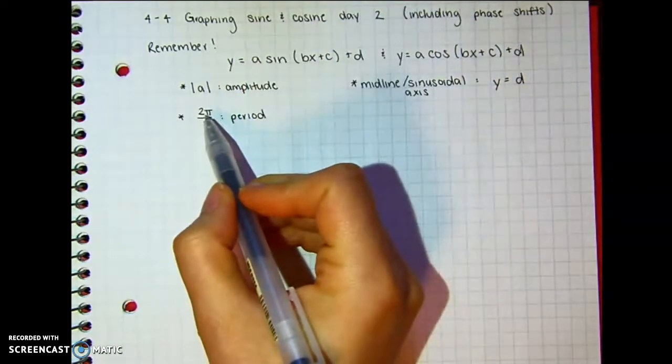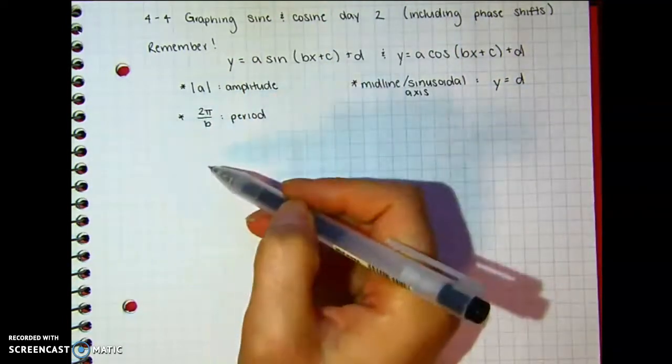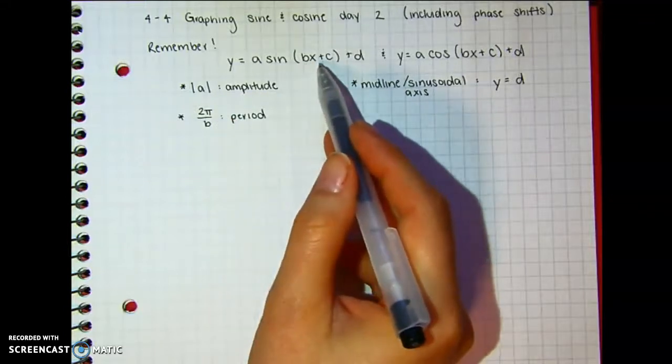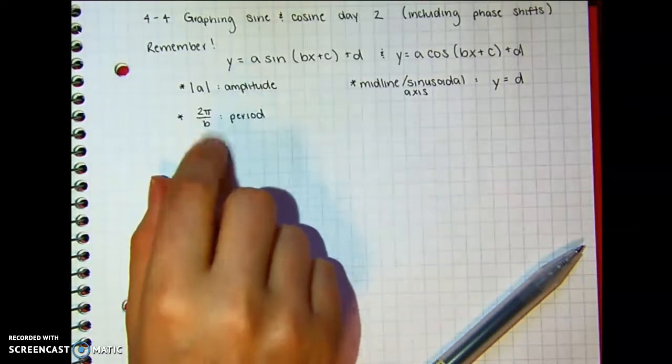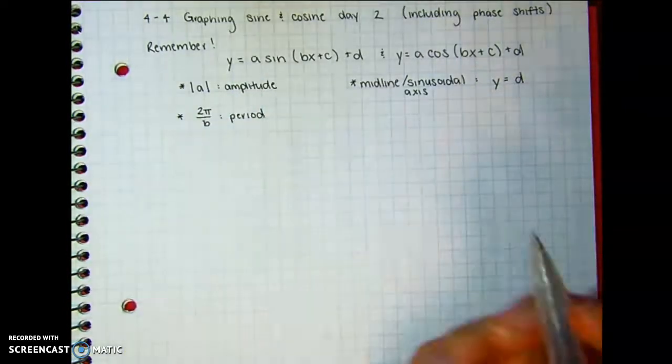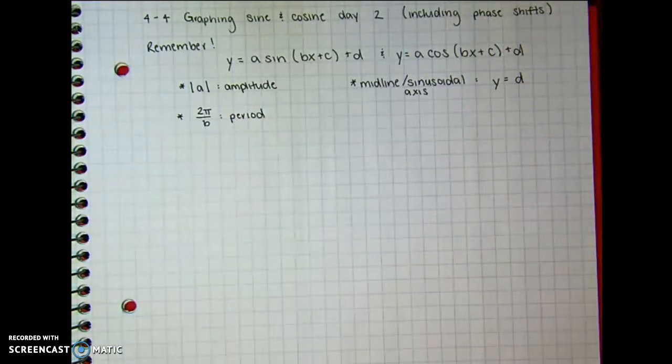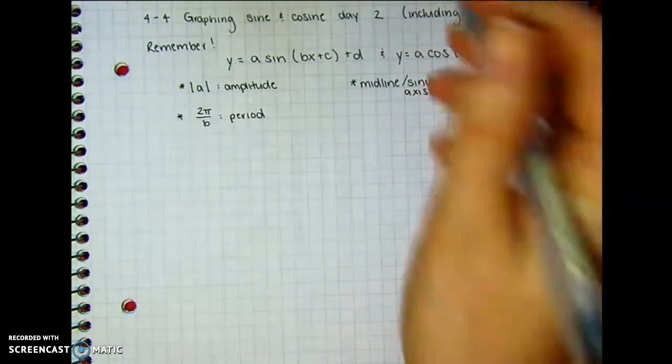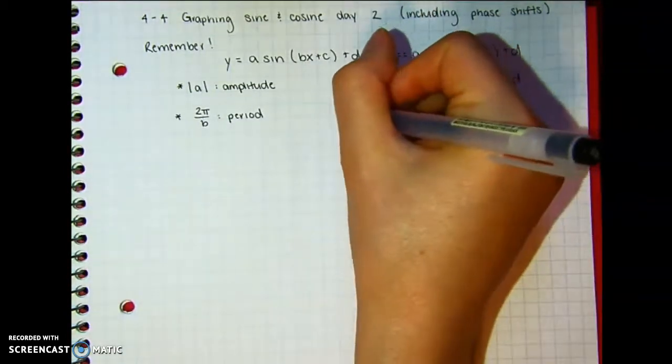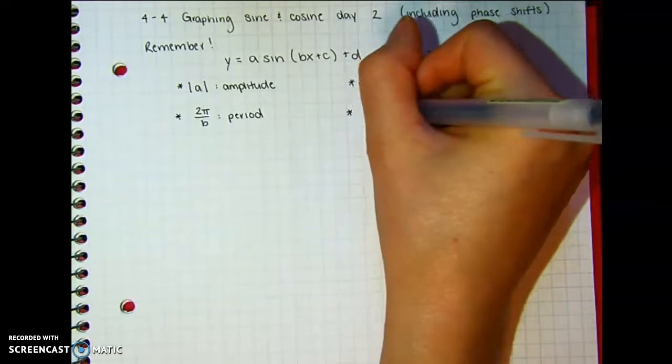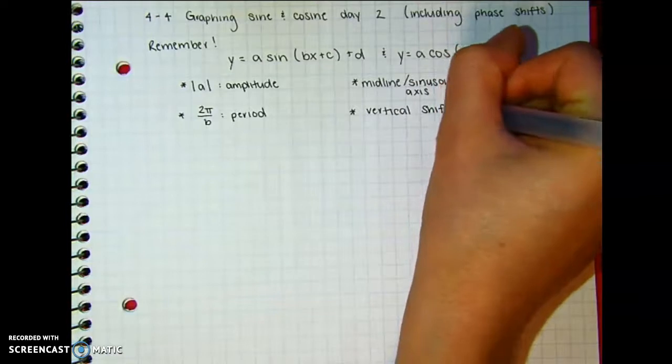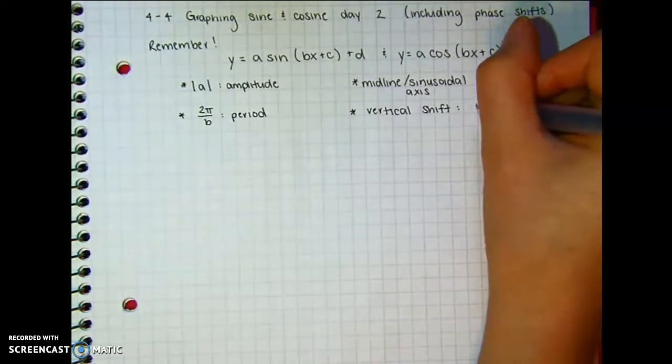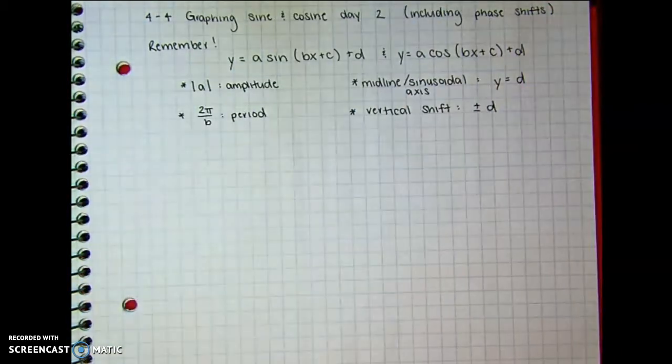And this should make sense because one cycle going once around the unit circle is 2π, and so B, because it's the x value, that's going to affect that distance, the horizontal distance. And so we're going to divide it by B. You can also think, in case you're asked for transformations, vertical shift is whatever that positive, it's either going up D or down D. This is all kind of a review.